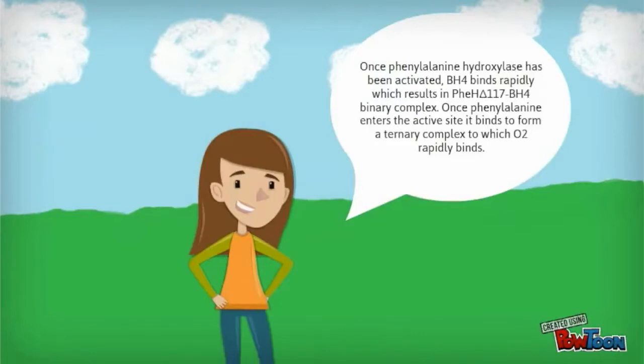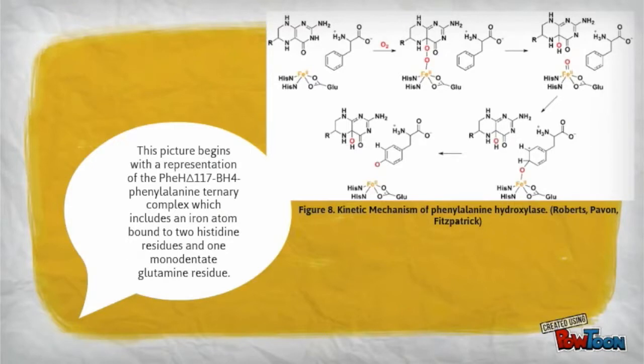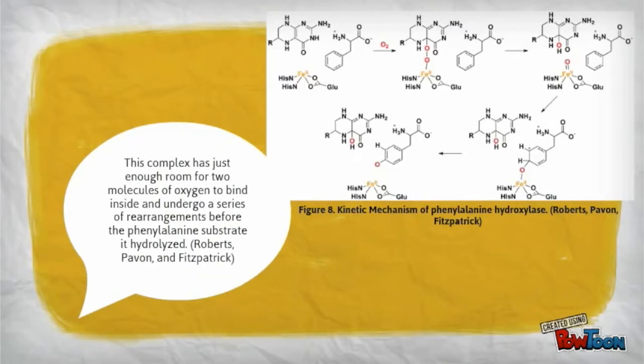Once phenylalanine hydroxylase has been activated, BH4 binds rapidly, which results in the phenylalanine hydroxylase-BH4 binary complex. Once phenylalanine enters the active site, it binds to form a ternary complex to which O2 rapidly binds. This picture begins with a representation of the phenylalanine hydroxylase-BH4-phenylalanine ternary complex, which includes an iron atom bound to two histidine residues and one monodentate glutamine residue. This complex has just enough room for two molecules of oxygen to bind inside and undergo a series of rearrangements before the phenylalanine substrate is hydrolyzed.